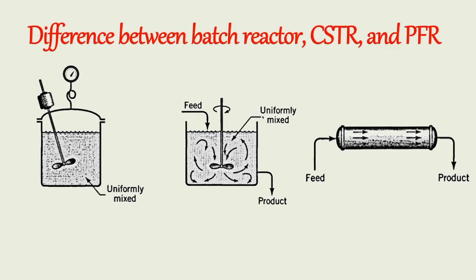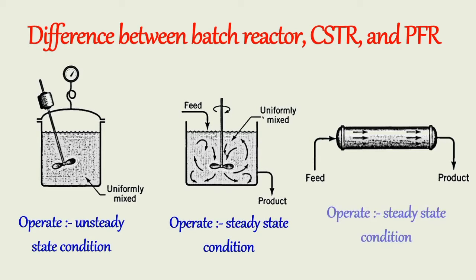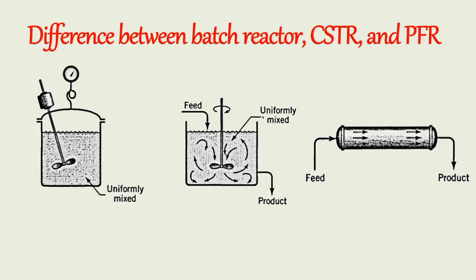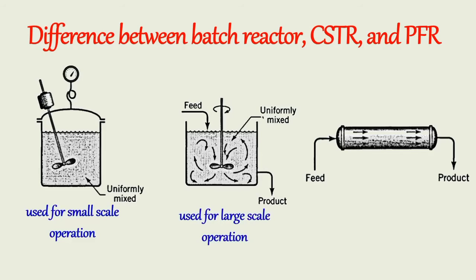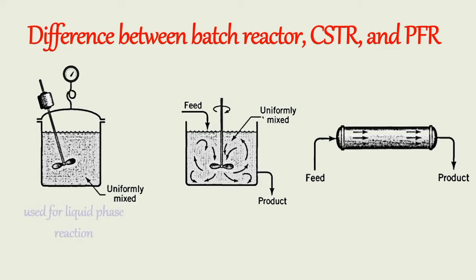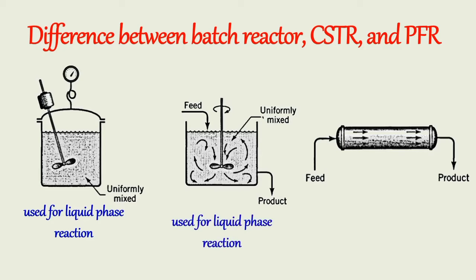The batch reactor operates under unsteady state conditions, but CSTR and PFR normally run at steady state. A batch reactor is used for small-scale operations, but CSTR and PFR can be used for large-scale operations. Batch reactor and CSTR are used for liquid phase reactions, and PFR is mostly used for gas phase reactions.